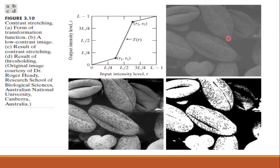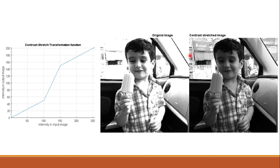An input image that is very low contrast, when you apply this contrast stretching transformation function, gives a very good high contrast image. If you apply the thresholding function, the image becomes a binary image having only black and white values. When implementing the contrast stretching function in MATLAB, you get a good high contrast image.